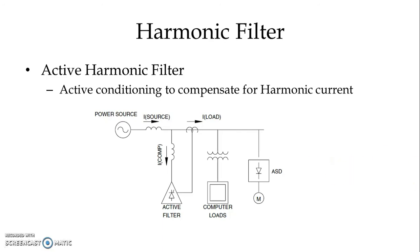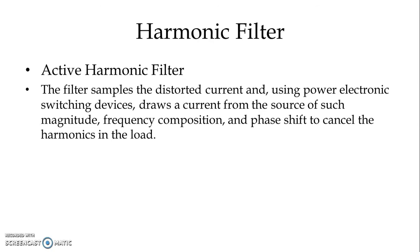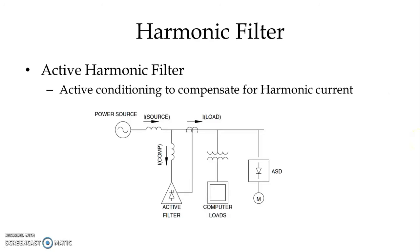We use an active device for eliminating certain harmonics. The filter samples the distorted current and, using a power electronic switching device, draws a current from the source of such magnitude, frequency composition, and phase shift as to cancel the harmonics in the load. We sense the distorted current, and as per the sample taken, the active filter responds accordingly.